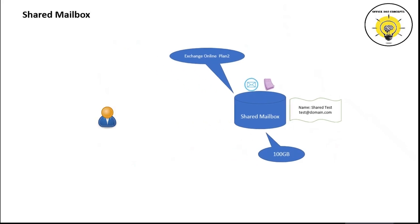If you create a shared mailbox in Exchange Admin Center and go to Office 365 Admin Center under active users, you will see a similar account created for that shared mailbox. When you create a shared mailbox, an associated account is also created in Office 365 Admin Center under active users, and that account will have the same attributes you gave to the shared mailbox. You will be able to see all the similar attributes for this account as an active user within Office 365 Admin Center.